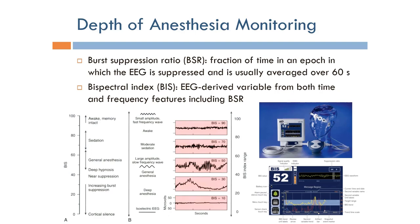More advanced depth of anesthesia monitoring relies on EEG. The burst suppression ratio (BSR) is computed from the EEG as the fraction of time within an epoch in which the EEG is suppressed, averaged over one minute. Looking at the EEG signal, we compare the segments with active EEG versus the suppressed segments with no activity. The higher the fraction of suppressed EEG, the greater the depth of anesthesia.